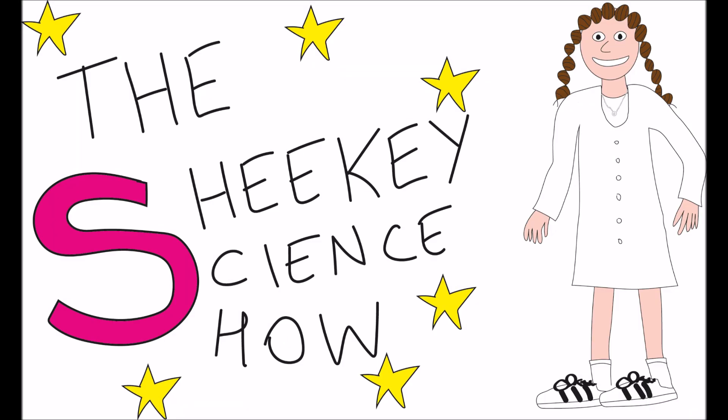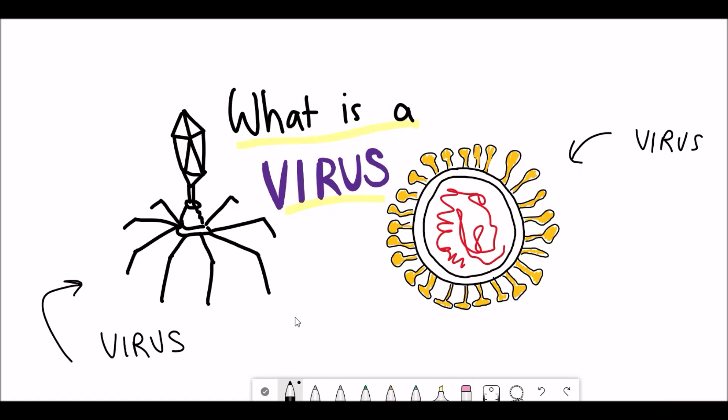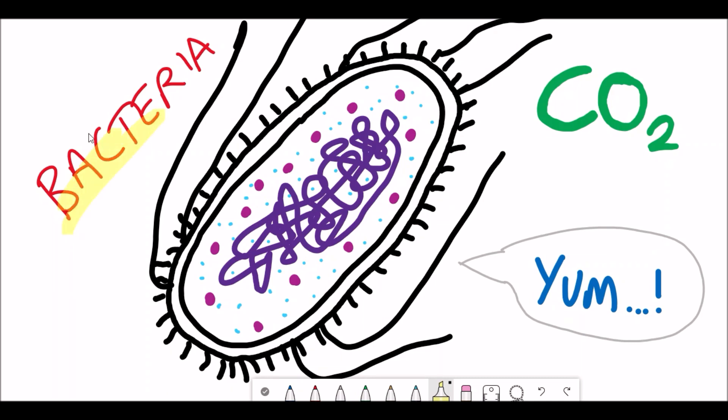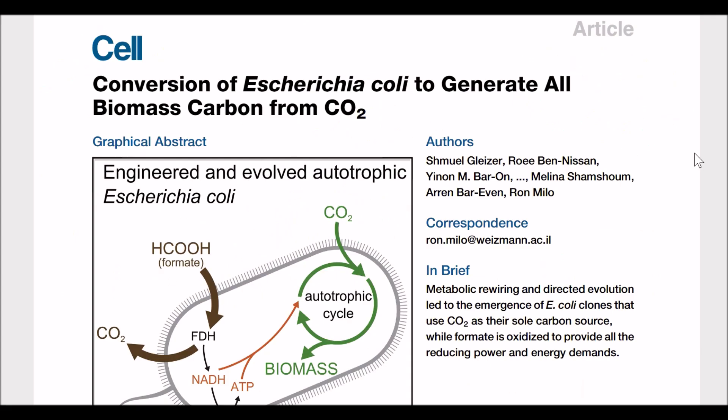Hello and welcome to the Shiki Science Show. In my last video we spoke about viruses, and in this video we're going to talk about bacteria. In particular, we'll focus on one type of bacteria called E. coli and how a recent study has shown that E. coli can be forced to grow on only carbon dioxide.